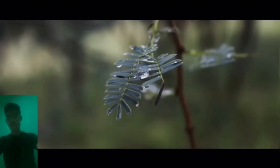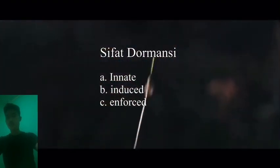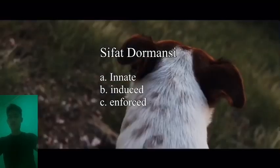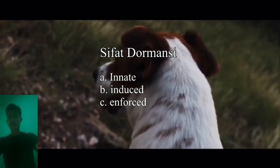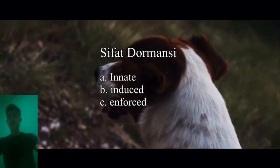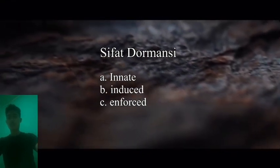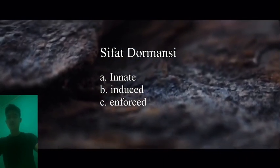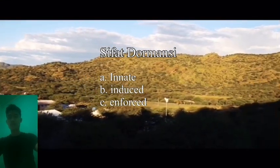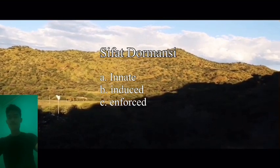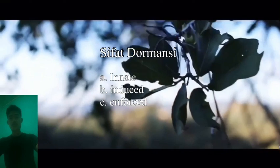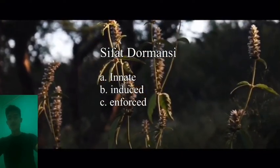Di sini saya akan menjelaskan mengenai masalah dormansi. Dormansi bersifat innate dan enforced. Dormansi innate adalah dormansi yang menghambat perkecambahan pada saat benih terlepas dari tanaman induknya. Sedangkan induced dormansi adalah dormansi sementara yang terjadi saat benih mendapatkan suhu panas atau dingin atau dalam kondisi lingkungan lainnya. Dan dormansi paksaan terjadi karena faktor lingkungan, yakni kelembaban, cahaya, dan oksigen yang kurang menguntungkan.